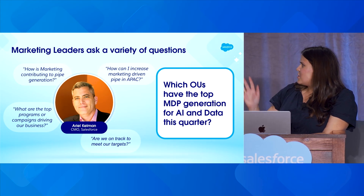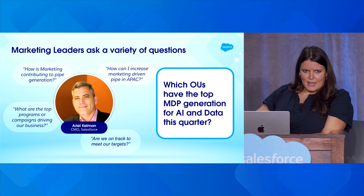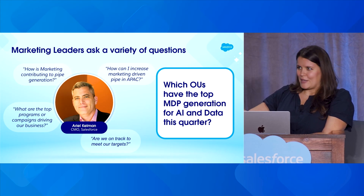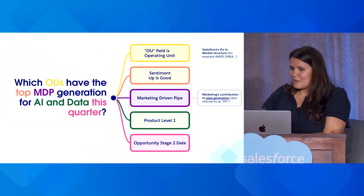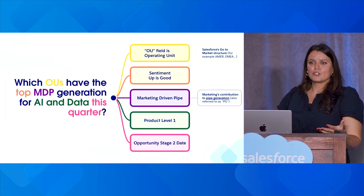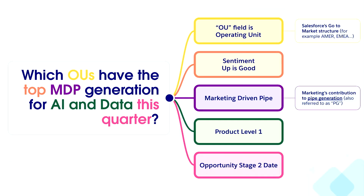This one says: which OUs have the top MDP generation for AI and data this quarter? If this doesn't mean anything to you, that's fine — it doesn't mean anything to most people. This question is very complicated because you need a lot of prerequisite knowledge to answer it. You have to know that OU is operating unit, how we describe our go-to-market structure at Salesforce. You need to know MDP is marketing-driven pipe, which is marketing's contribution to pipe generation. You also have to know that AI and data is one of our products, and that Salesforce fiscal quarters are not aligned to the calendar year.